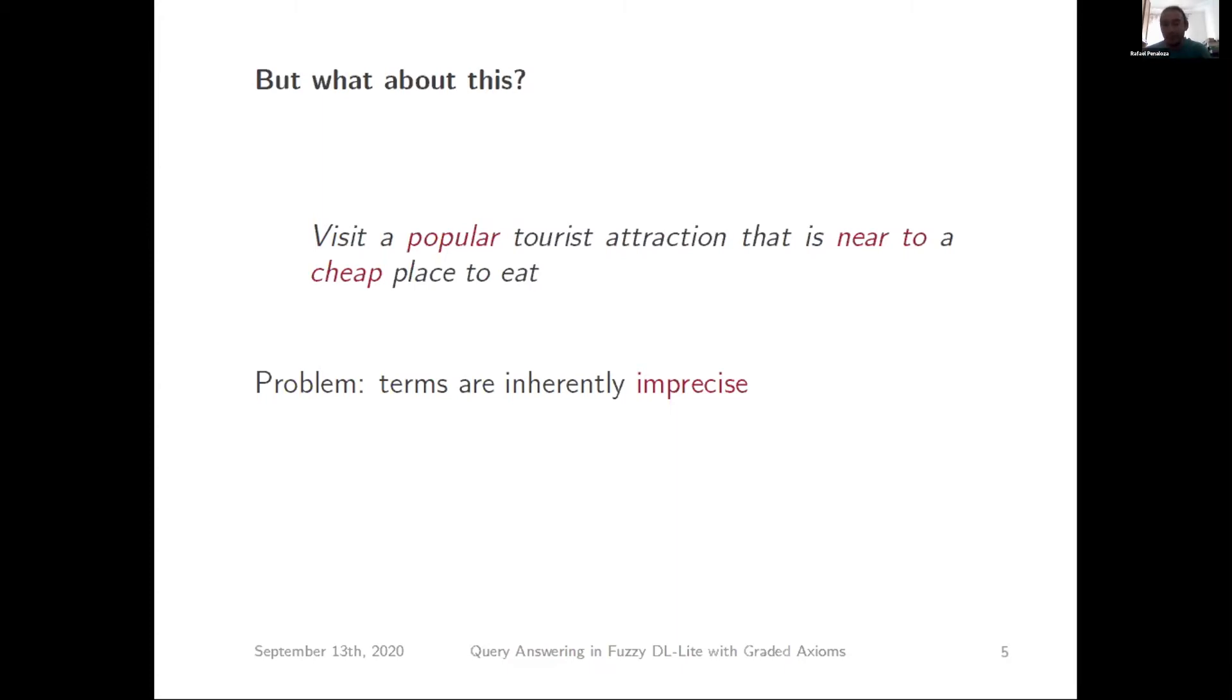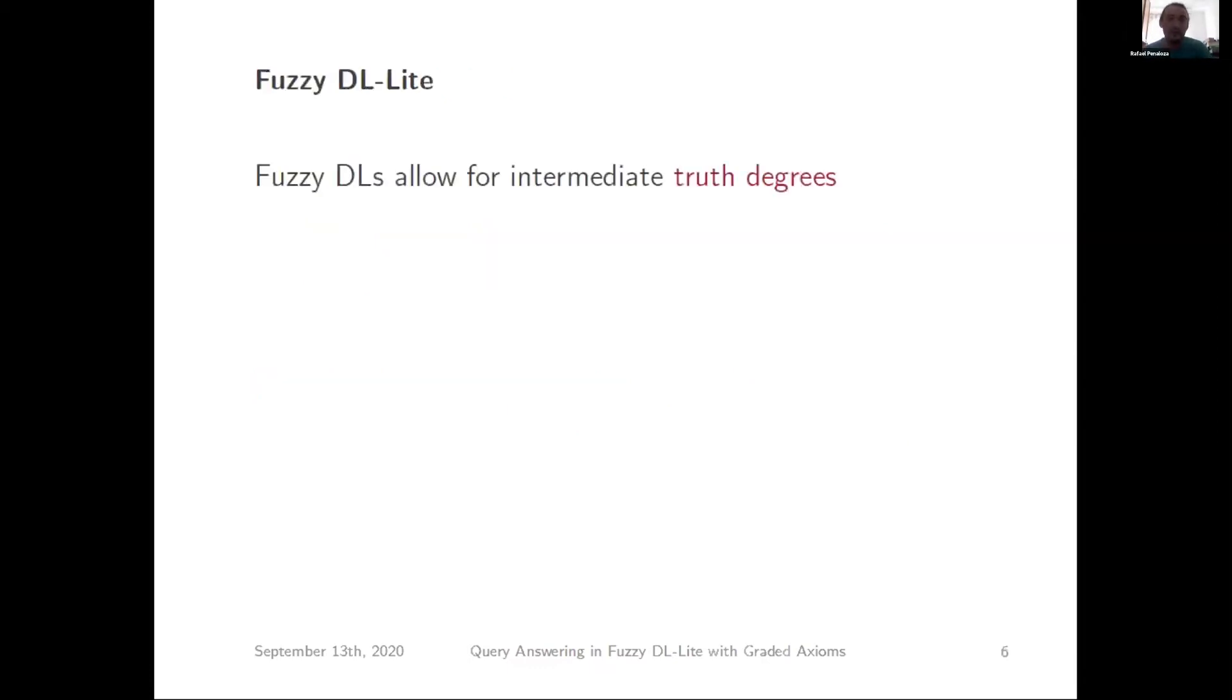Near to and cheap have some kind of numerical value that we could associate to a degree, but popularity is very difficult to handle distinctly numerical. We have to be able to assign some semantics to these notions. When we ask a query and get an answer, we should take into account this imprecision. That's where fuzzy logic comes into place.